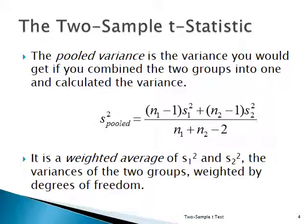You've got the pooled variance, and you see how easy this is. You do n1 minus 1 times s1-squared, plus n2 minus 1 times s2-squared, divided by the degrees of freedom, n1 plus n2 minus 2. That gives you s-squared pooled — just the weighted average of the two variances from the two groups.